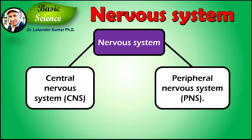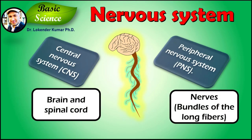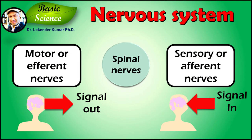In vertebrates, the nervous system consists of two main parts: the central nervous system (CNS) and the peripheral nervous system (PNS). The CNS consists of the brain and the spinal cord. The PNS consists mainly of nerves, which are enclosed bundles of long fibers or axons that connect the CNS to every other part of the body. Nerves that transmit signals from the brain are called motor or efferent nerves, while those nerves that transmit information from the body to the nervous system are called sensory or afferent nerves.